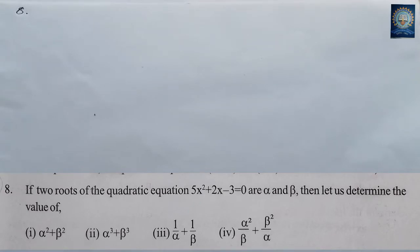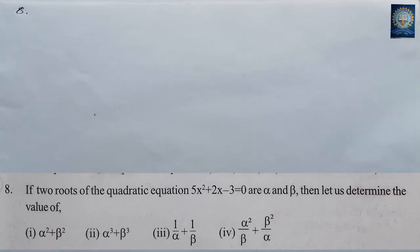If two roots of the quadratic equation 5x² + 2x - 3 = 0 are alpha and beta, then let us determine the value of the given sub-questions. I will first look at the equation, take the formula, and derive the value.